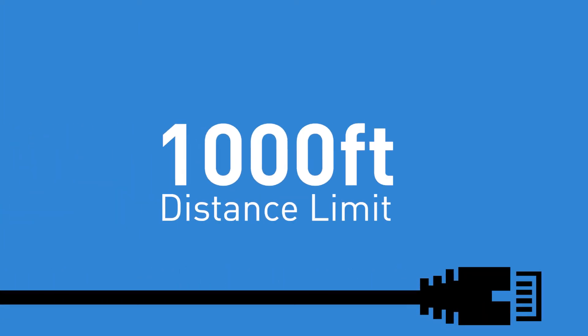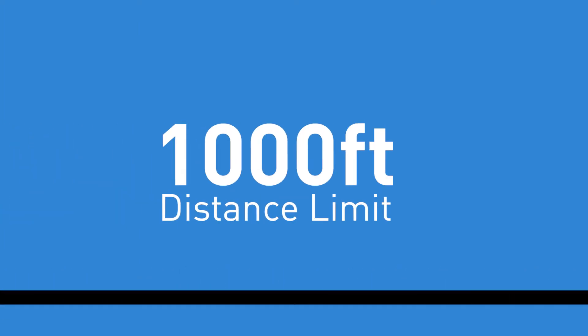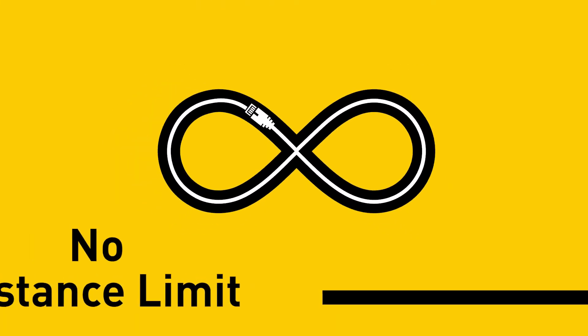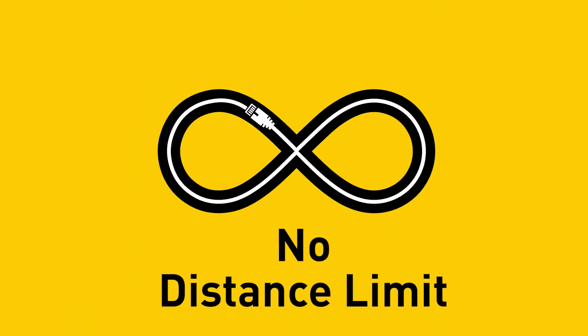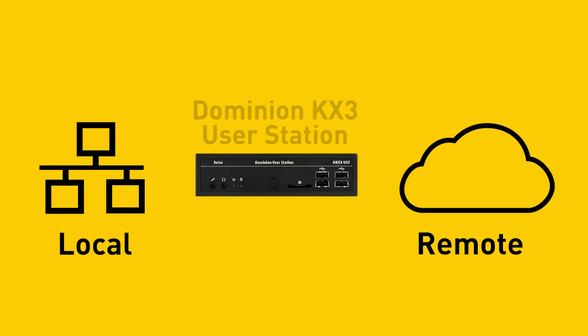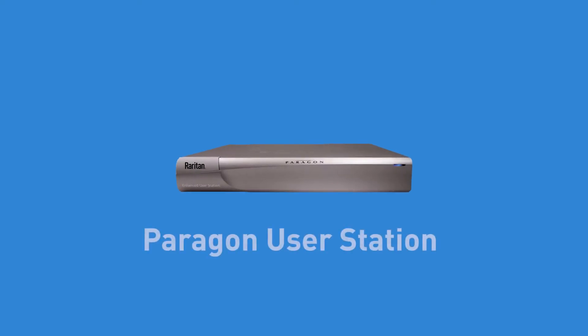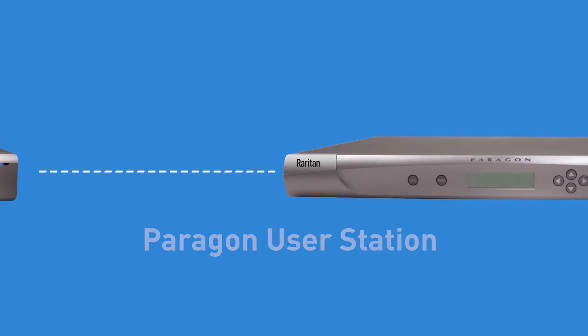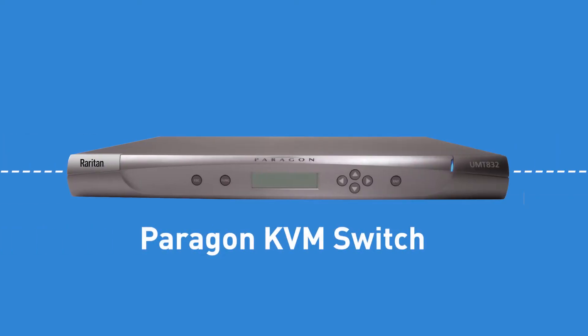The Paragon 2 uses Cat5 cables to connect users to servers with an overall 1,000-foot distance limit. The KX3 is an IP KVM switch with no distance limits, and delivers local and remote access with its optional user station.